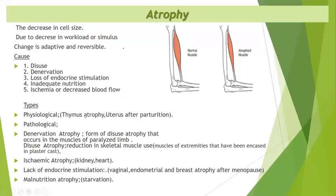The types of atrophy are physiological, including that seen in the thymus and in the uterus after parturition. Pathological atrophies include denervation atrophy, which is a form of disuse atrophy that occurs in the muscles of a paralyzed limb; disuse atrophy seen in skeletal muscles of the extremity encased in a plaster cast; ischemic atrophy seen in the kidney, heart and other organs due to decreased blood flow; lack of endocrine stimulation seen in the vagina, endometrium and breast after menopause; and malnutrition atrophy seen in starvation.